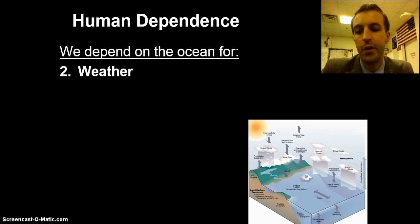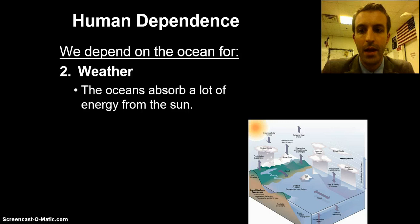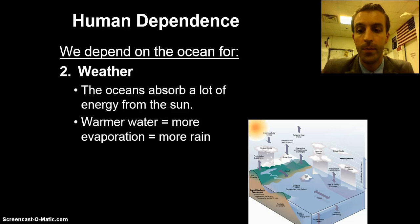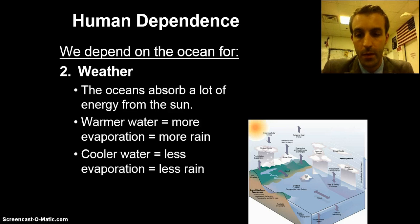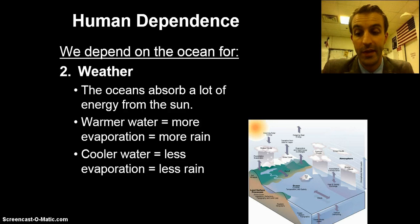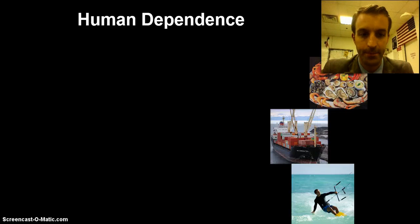We also depend on the ocean for weather. That goes into the whole current system. The oceans absorb lots of the sun's energy and provide a method for getting it around the world. Warmer water means more evaporation, which means more rain, which is why the tropical areas end up with more rain than the rest of us. Cooler water, by corollary, means less evaporation and therefore less rain.